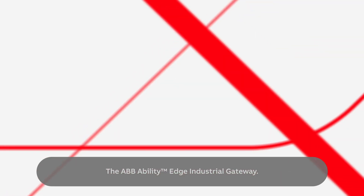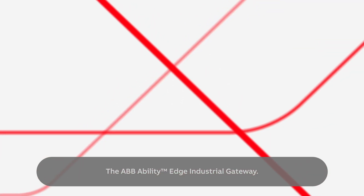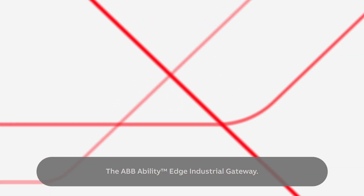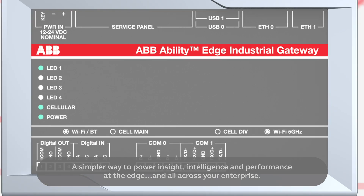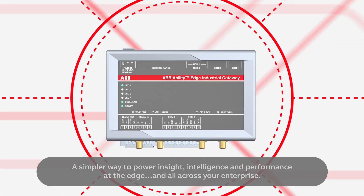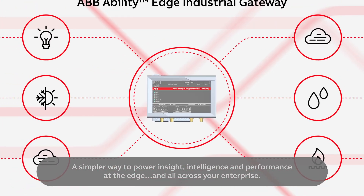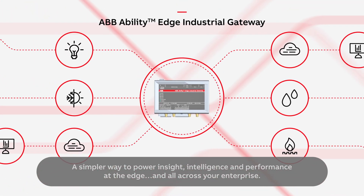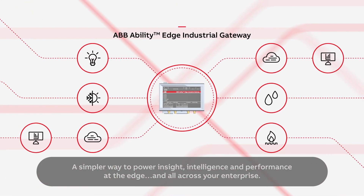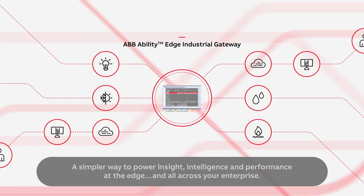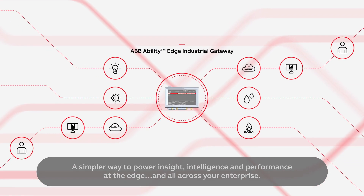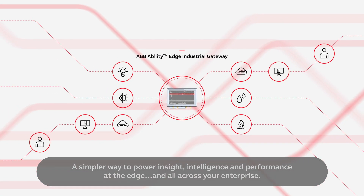The ABBAbility Edge Industrial Gateway is a simpler way to power insight, intelligence, and performance at the edge and all across your enterprise.